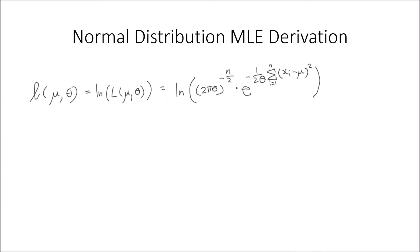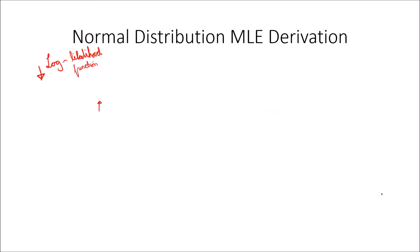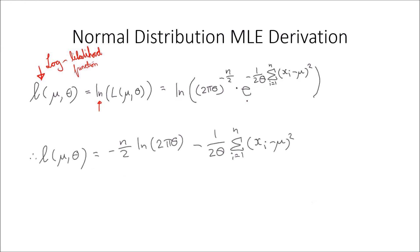The likelihood function is useful, but we're going to use the log-likelihood function because it's far easier to take its derivatives — it simplifies the expression greatly. This cursive L denotes the log-likelihood function, which is just the natural logarithm of the likelihood function L(mu, theta). We simply take the natural logarithm of what we derived previously.